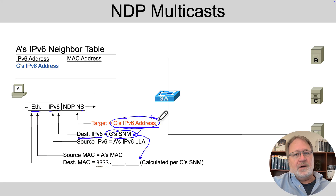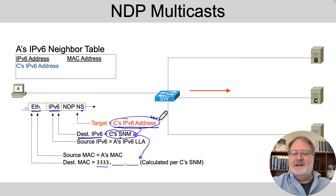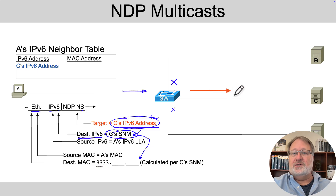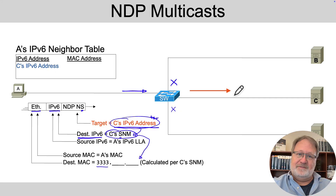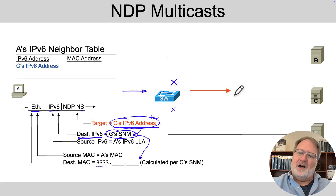It seems like a lot of work compared to ARP, and it is, but here's the beauty of it: the message comes in to the switch and the switch is smart enough to not forward a copy out on all ports, only forwarding it over to host C because of multicast logic in the switch. So it's greatly improved in terms of not bothering hosts when they don't need to be bothered.